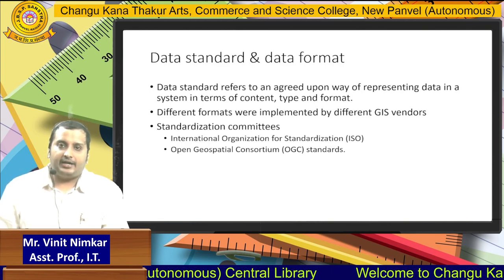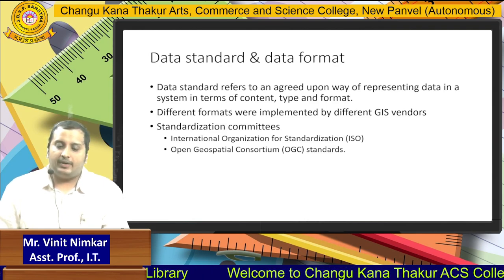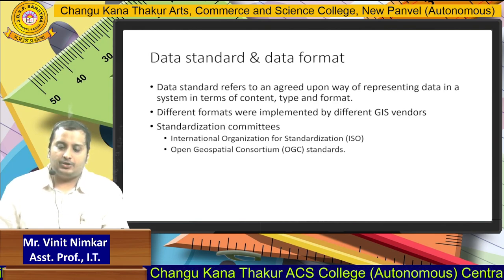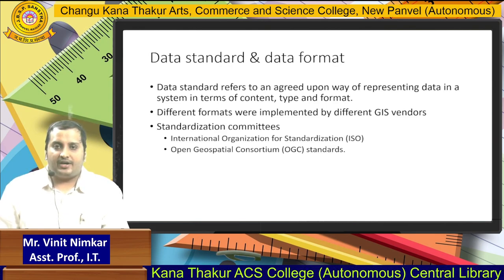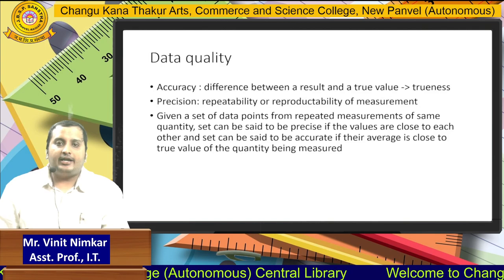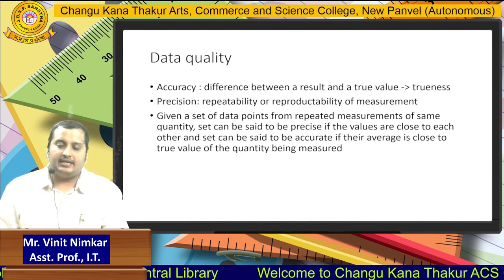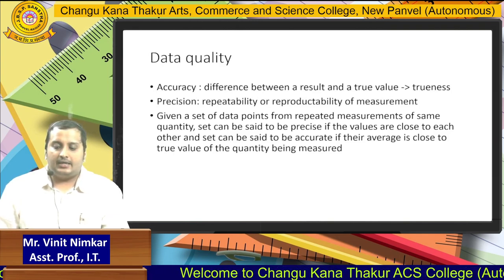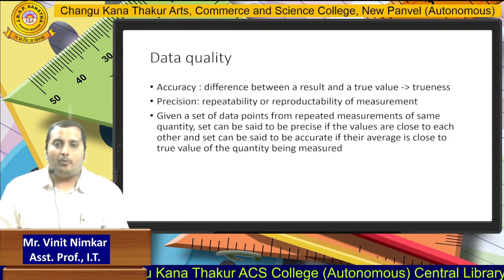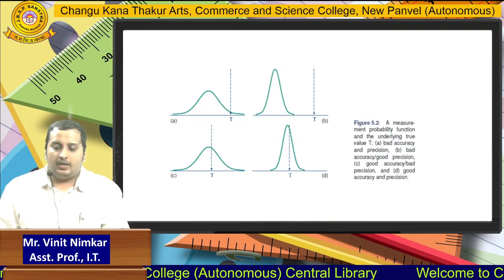Next is data standard and data format. As we already know from Unit 2, it has been defined by the ISO — International Organization for Standardization — and OGC — Open Geospatial Consortium. They have defined certain standards and formats which have to be maintained. Data quality means data should be high quality, meaning it should have high accuracy. Accuracy means the difference between the result and the true value should be as small as possible. Next is precision — no matter how many times we use these maps or data, the results should not change.